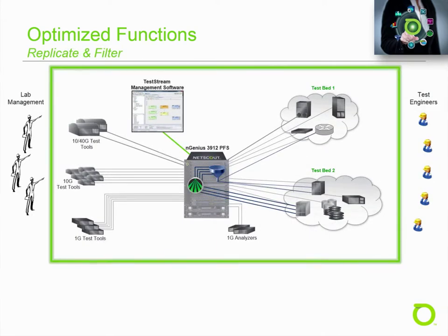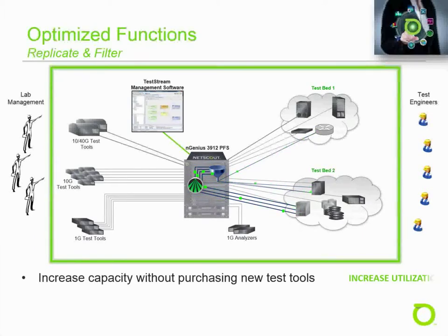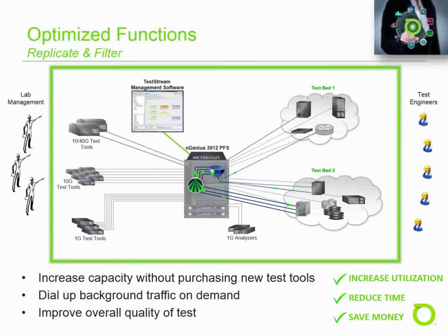Creating background load is an important mechanism for conducting effective cyber and security testing. This increased bandwidth can bring security vulnerabilities to the forefront due to the additional stress placed on devices and applications. By using the replicate function, test engineers can create significant background load on a system under test without purchasing additional test tools. By refining the replicated test stream with layer 2 through 4 filters, the additional load can be varied as required by test objectives. This improves the overall quality of the test, especially in cases where background load isn't being applied today.